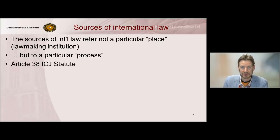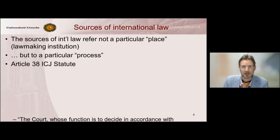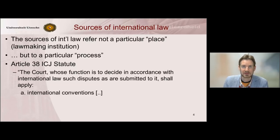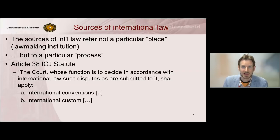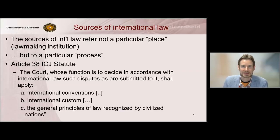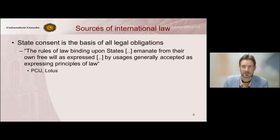Article 38 of the ICJ statute lists the most important sources of international law. We have conventions, we have treaties, custom, and then we have general principles of international law. Those are the three main sources of international law.